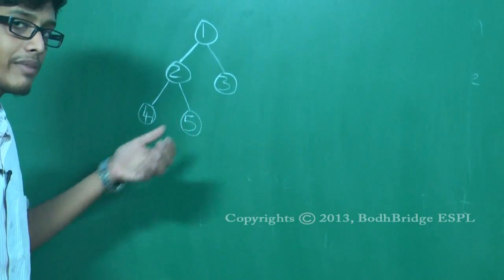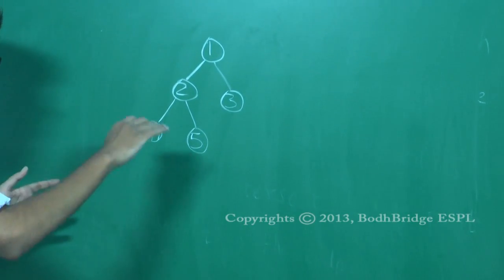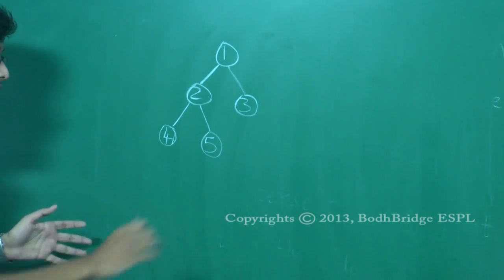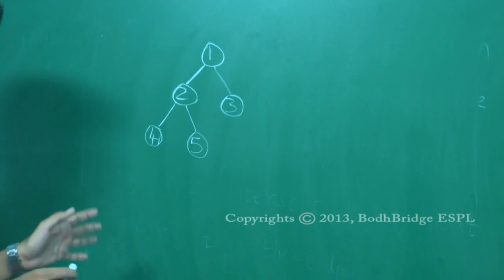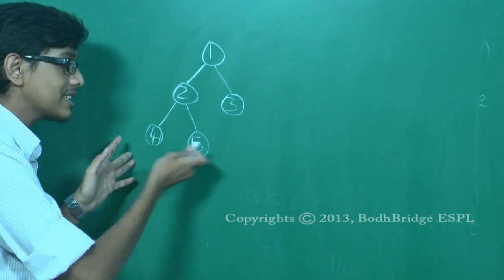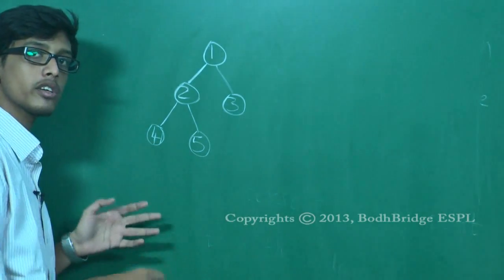So this is a complete binary tree. Basically you keep filling in the nodes at each level from the leftmost possible point. But this is not a full binary tree. For it to be a full binary tree, it should have the maximum number of nodes in every level. So here it should have two more nodes for it to be a full binary tree.